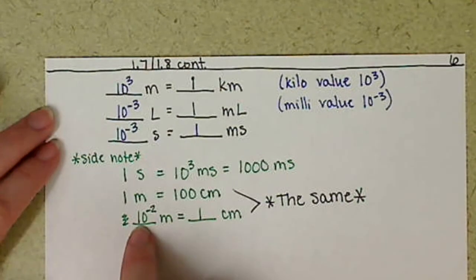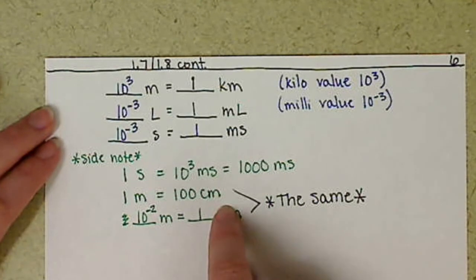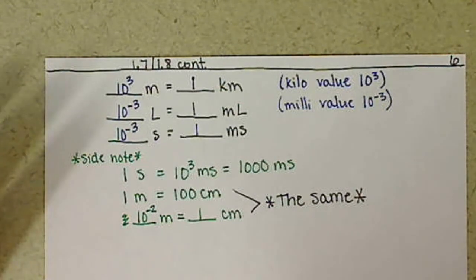So in 10 to the negative 2 meters, you have 1 centimeter. These two values here, these are the same. Mathematically, they are the same. They are going to work the same. They're going to do just fine.